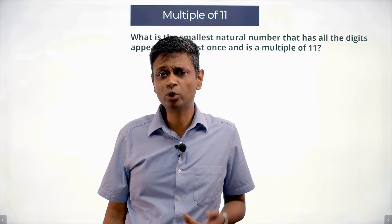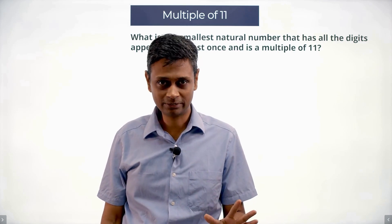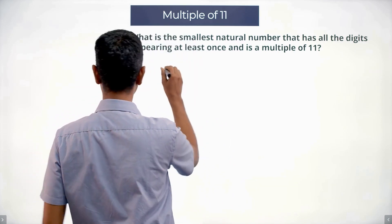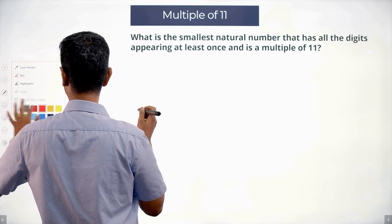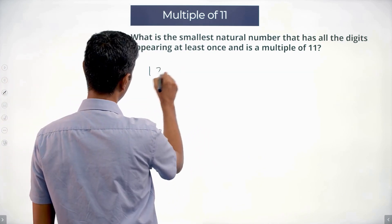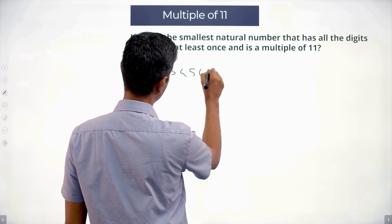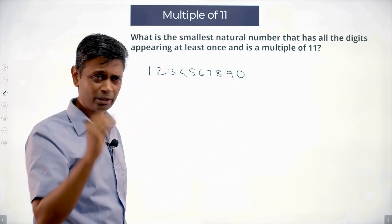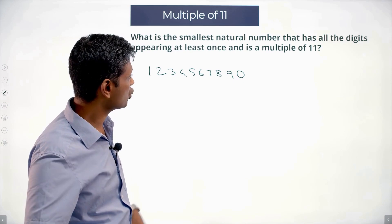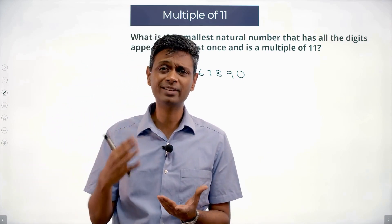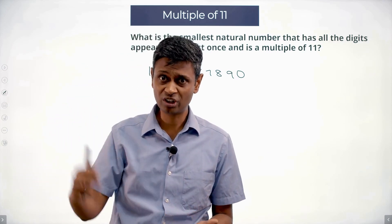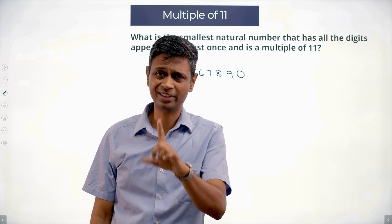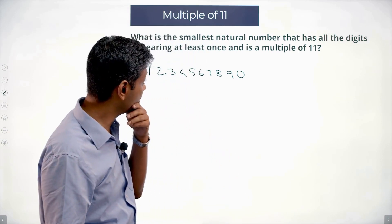So probably I'm looking for a 10-digit number — a rearrangement of 1, 2, 3, 4, 5, 6, 7, 8, 9, 0 — rejig it in some form and get the smallest possible number. I'm assuming that there's a 10-digit number, so each digit appearing exactly once, not at least once, exactly once. And somehow I manage a multiple of 11.